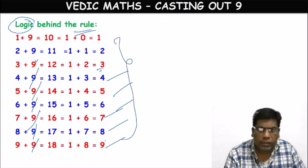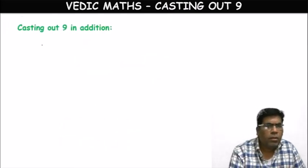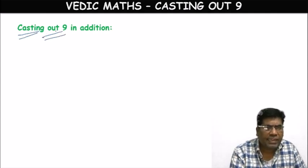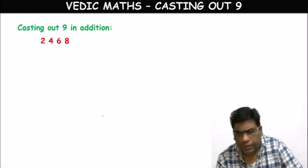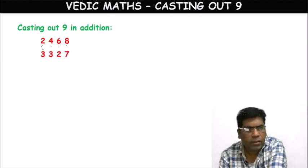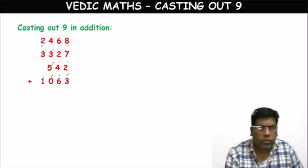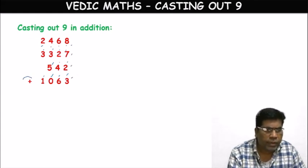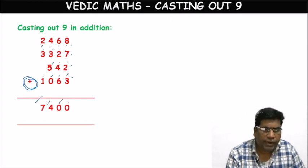Now we will apply this technique to check the correctness of operations. Let's start with addition. Suppose you have four numbers: 2468, 3327, 542, and 1063, and you are doing addition. Suppose your answer is 7400. We want to check whether it is correct through this Casting Out Nines technique.